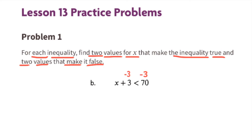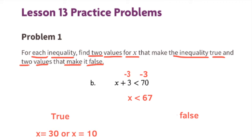Part b: x plus 3 is less than 70. Subtract 3 from both sides and you're left with x is less than 67. Values for x that would make this true would be any values less than 67 — for example, x could be 30 or 10. Values that make it false would be any values not less than 67 — for example, x could be 90 or 100.